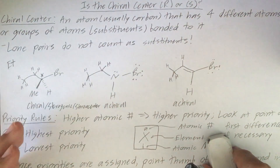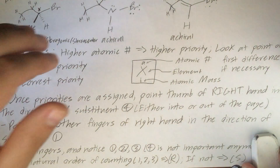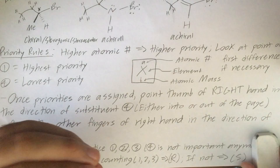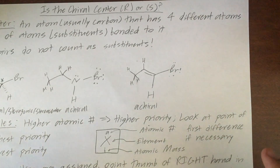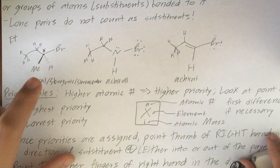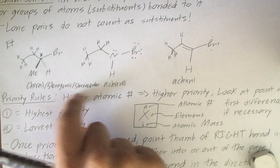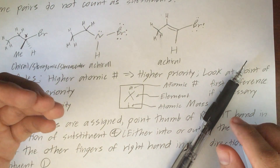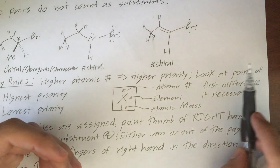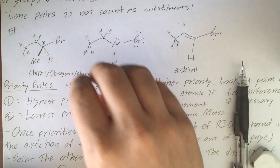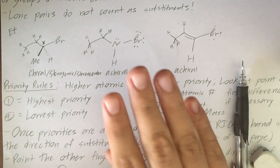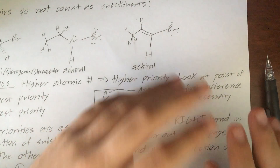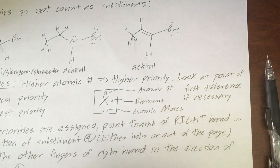Now let's go over the basics of the priority rules, which are what we use to assign R or S configuration to chiral centers. Only chiral centers can be labeled as R or S — if you have an achiral center, it cannot be R or S. The priority rules state that as the atomic number of your substituent increases, its priority also increases. There are four priority levels: one is the highest priority and four is the lowest. Another key rule is that you look at the point of first difference when necessary.